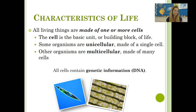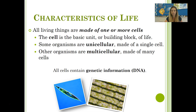The first characteristic on your list is that all living things are made of one or more cells. A cell is the basic unit or building block of life. Some organisms are made up of only a single cell, and we call those organisms unicellular — like this little protist here called a euglena. A bacterial cell is also a single-celled organism. Other organisms, like us and plants, are multicellular and are made up of many cells. All cells contain genetic information, typically DNA, but not always — all cells do carry genetic information.